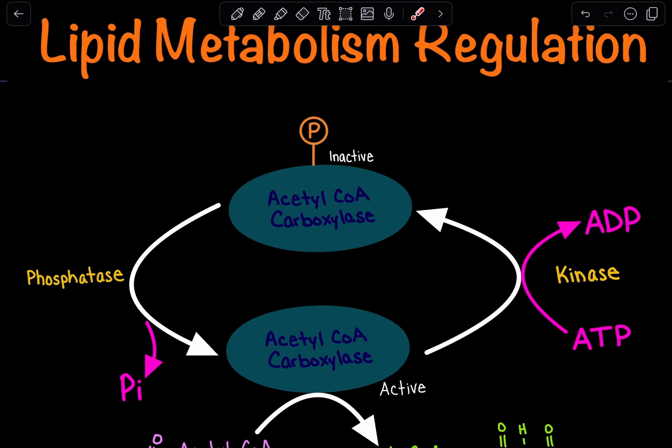How do we phosphorylate ACC? The phosphorylation process uses ATP, which is converted to ADP as the phosphate group attaches to acetyl-CoA carboxylase, making it inactive. This phosphorylation is done by a kinase, a class of enzymes responsible for phosphorylation with the help of ATP.